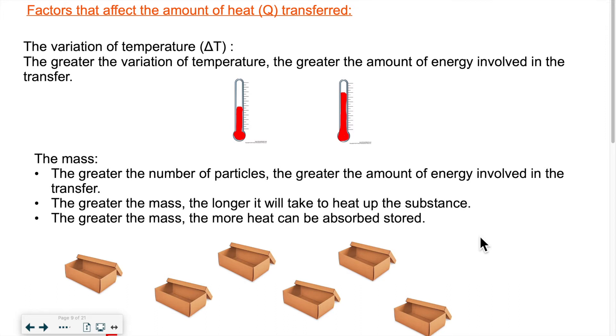Now, what are the different factors that affect how much heat is transferred? The first one is the variation of temperature. Obviously, the more the temperature goes up or down, the more heat transfer was involved. If we take a look at this example, this thermometer has a lower temperature, this one has a higher temperature. So this one would have less of a heat transfer. This one would give a reading for a higher energy transfer, so higher heat. So the more heat transferred, the higher the variation of temperature from beginning to end of the experiment.